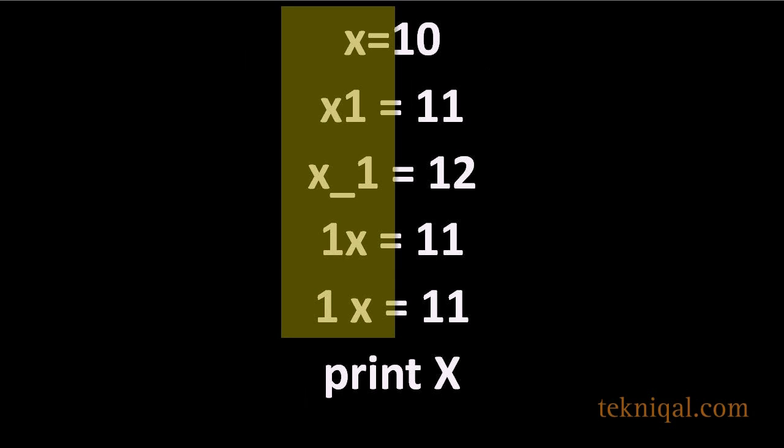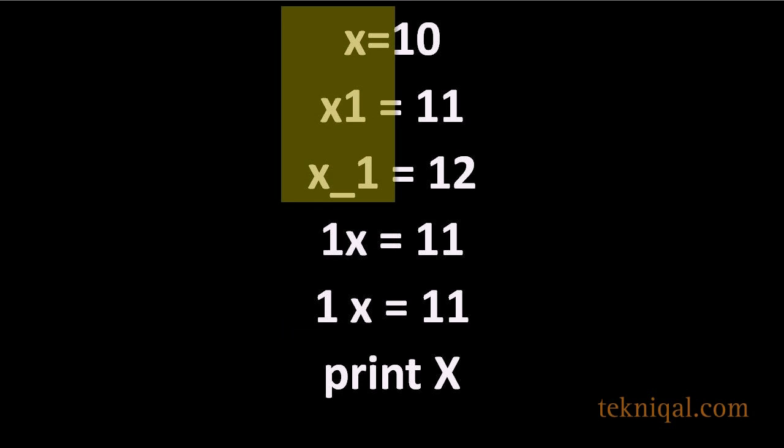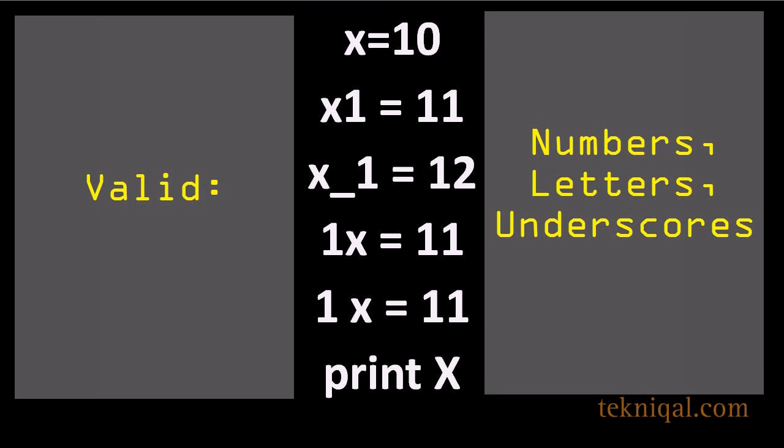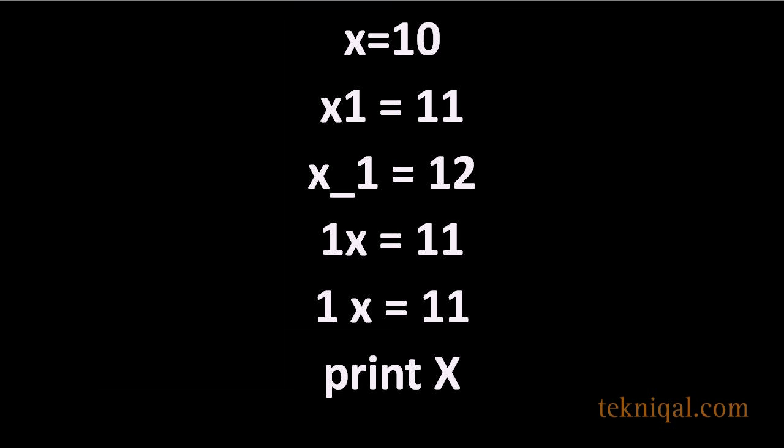In this example, everything on the left-hand side of the equal sign is an identifier. The first three are valid identifiers because they only contain numbers, letters, and underscores.